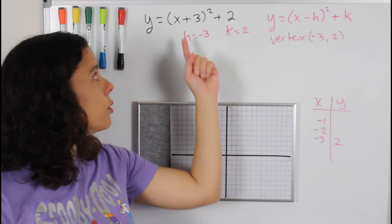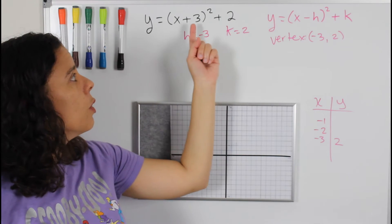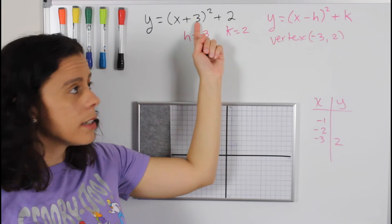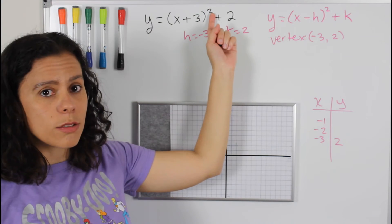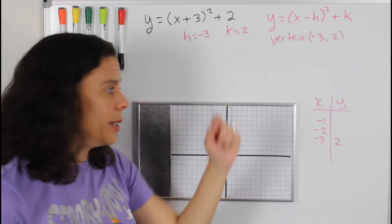So let's just substitute the negative two on the x. We have negative two plus three is one squared is one plus two is three.